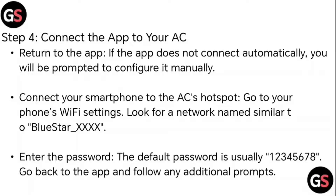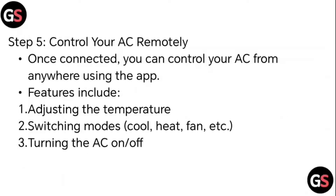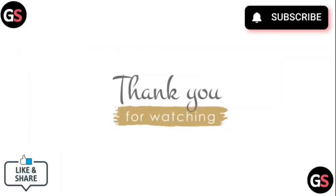Enter the password — the default password is usually 12345678. Go back to the app and follow any additional prompts. Step 5: Control your AC remotely. Once connected, you can control your AC from anywhere using the app. Features include adjusting the temperature, switching modes such as cool, heat, and fan, as well as turning the AC on or off.